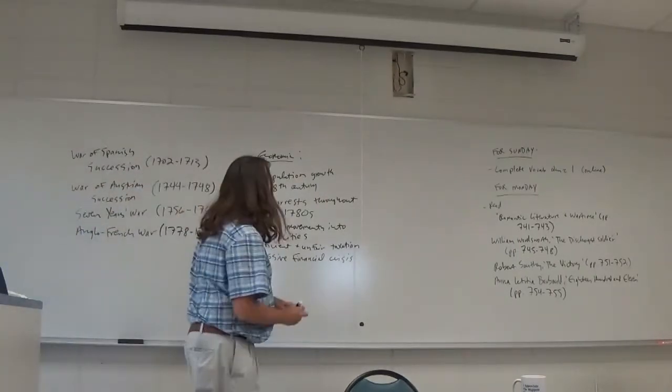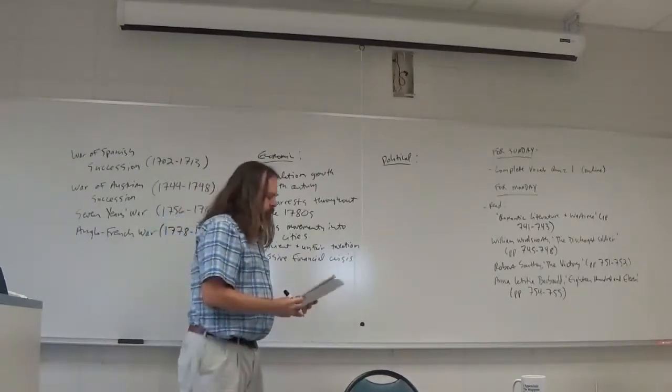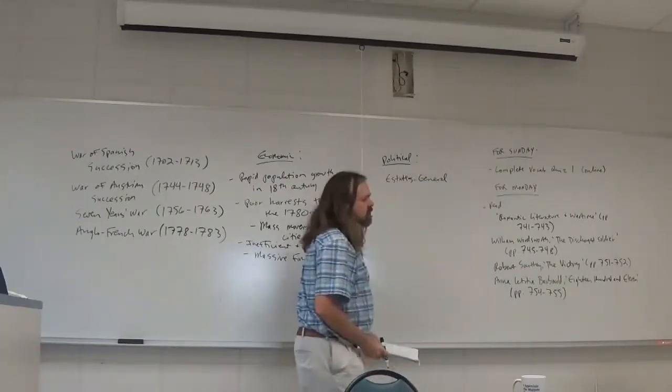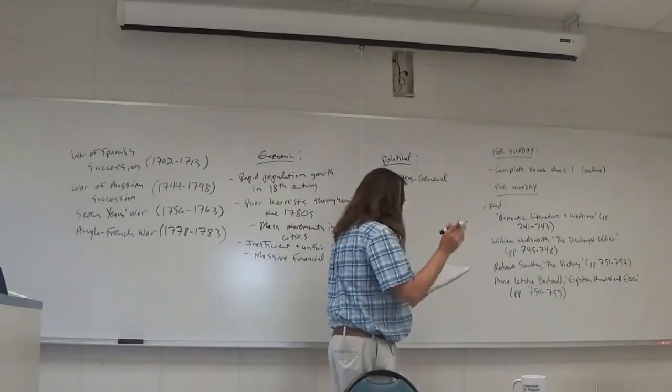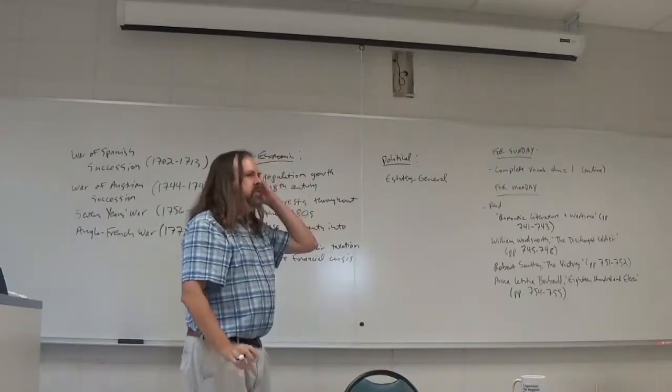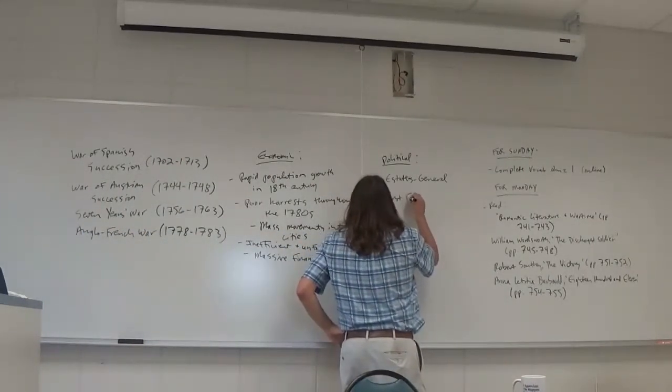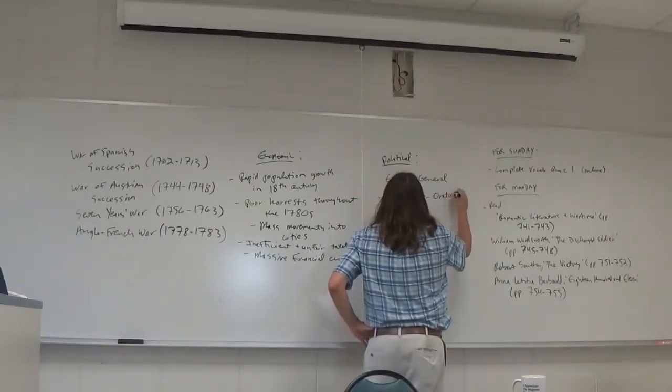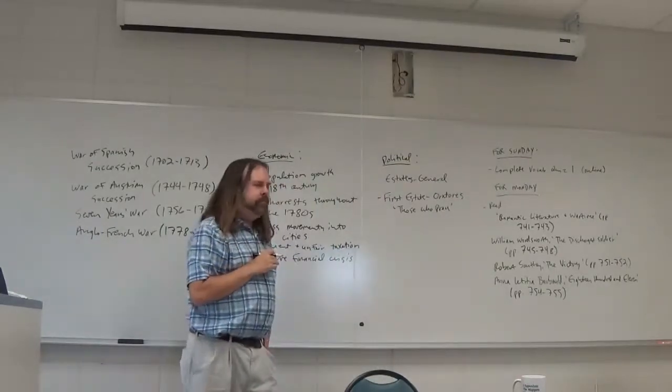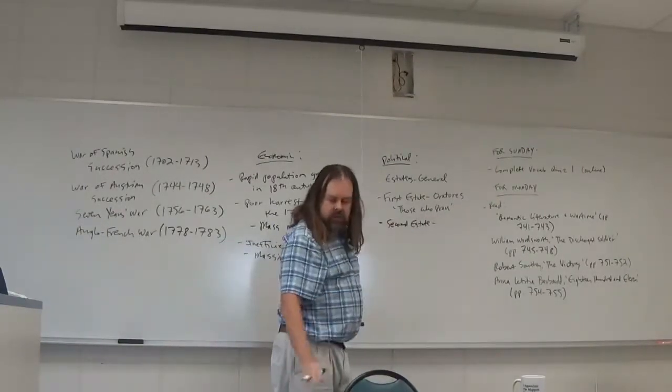There was also an extremely inefficient and unfair system of taxation in which the rich and the church managed to escape most forms of taxation. And the burden of taxation largely fell on people in the educated middle class. There was also a massive financial crisis in 1789 that was precipitated in part by the crown's need to pay for a series of wars with England and other European powers. And just to give you some sense of how deep Anglo-French rivalry ran, I'm just going to run down for you all of the different wars that Britain and France fought against each other in the 18th century.